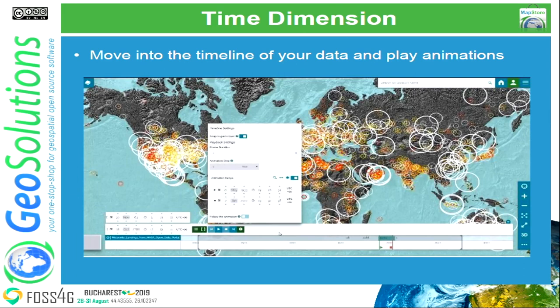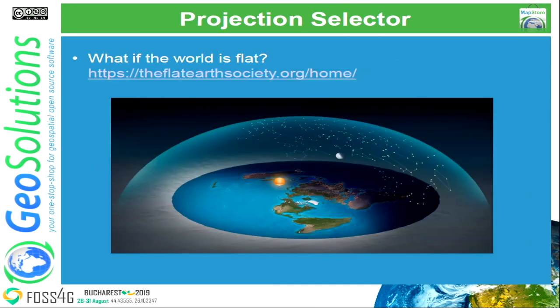We also have a new and fancy complete time slider that you can use with WMS time-enabled data to do all sorts of things — moving along time, doing range searches and filters, and also playing animations with your time-enabled data. This is just a quick example showing meteorites data along the years.